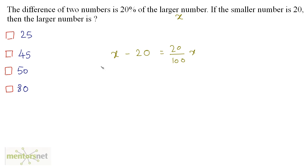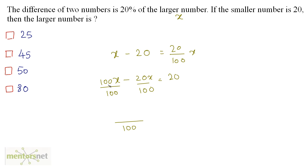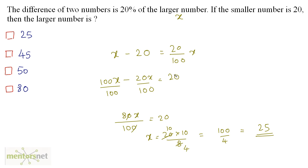So x minus 20 equals 20 by 100 times x. Rearranging: x minus 20x by 100 equals 20, which gives 100x minus 20x divided by 100 equals 20, so 80x by 100 equals 20. Therefore x equals 20 times 100 by 80, which simplifies to 100 by 4, giving x equals 25. The larger number is 25.